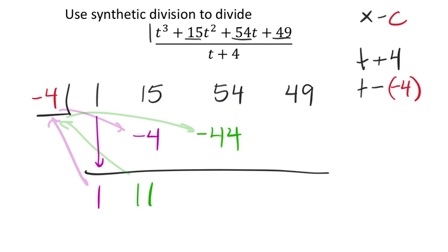And, again, this reads 54 minus 44, which is going to be 10. And then we've got 10 times 4, which is negative 40, which goes in our final spot there, negative 40. And 49 minus 40 is 9. Now, that's my remainder.